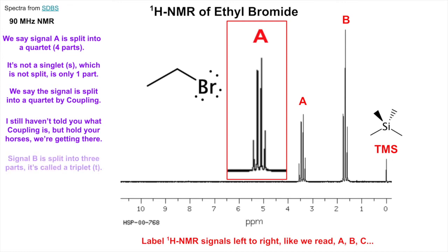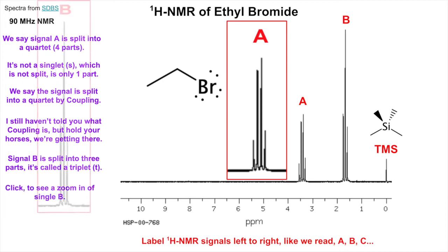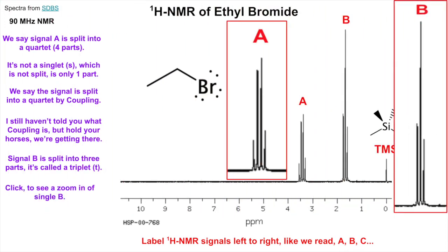Signal B is split into three parts - it's called a triplet. Zooming in on B, you can see it's short, tall, short. You notice a pattern: they're taller in the middle. We'll discuss that later. It's a triplet.